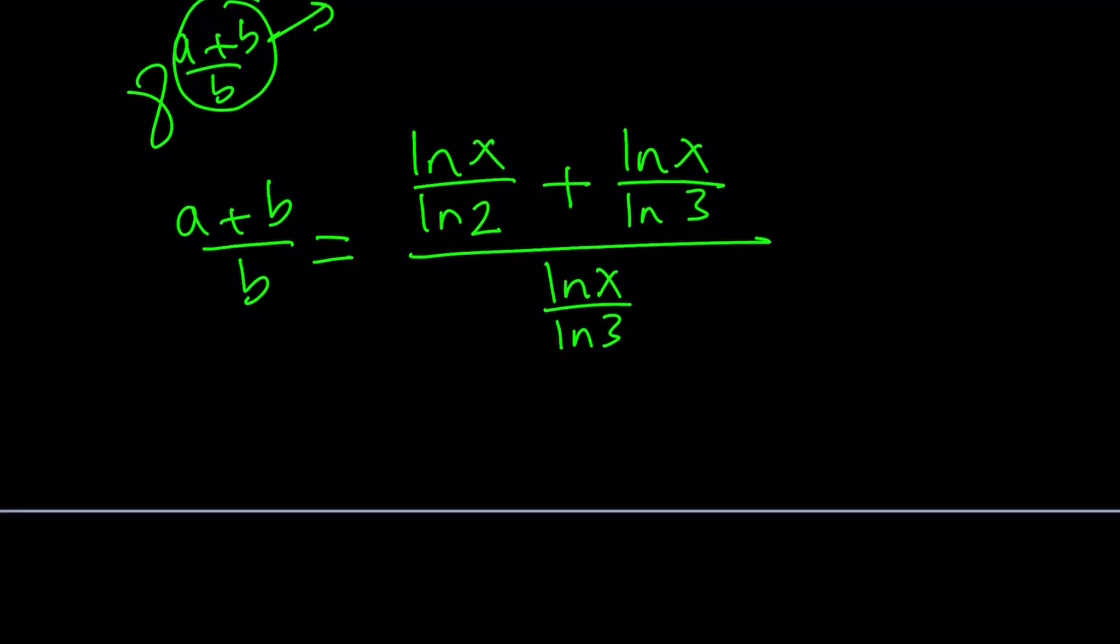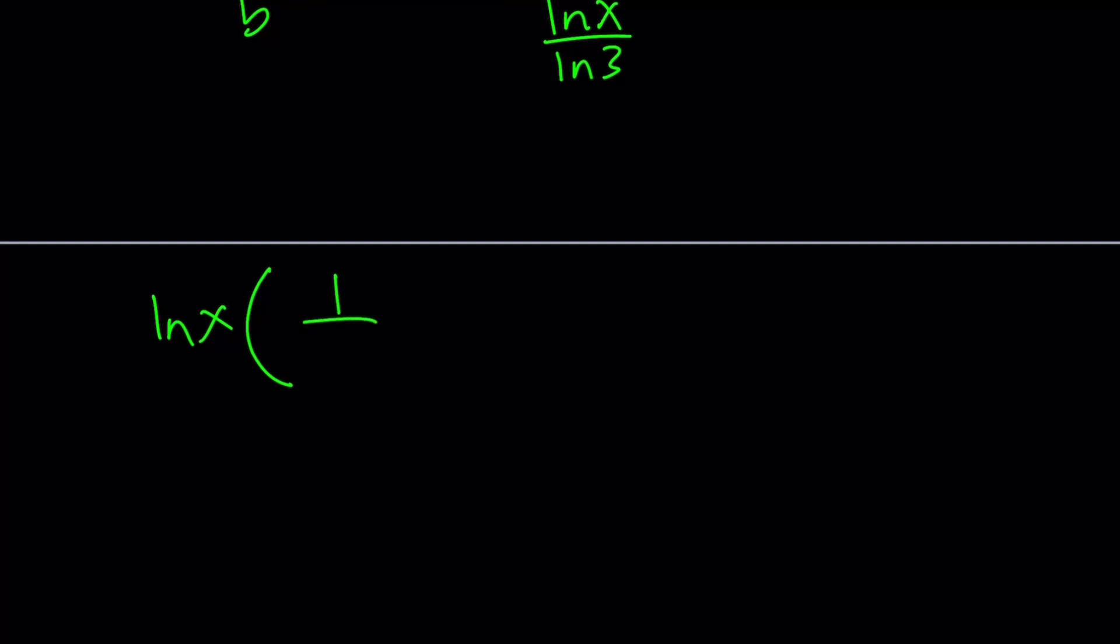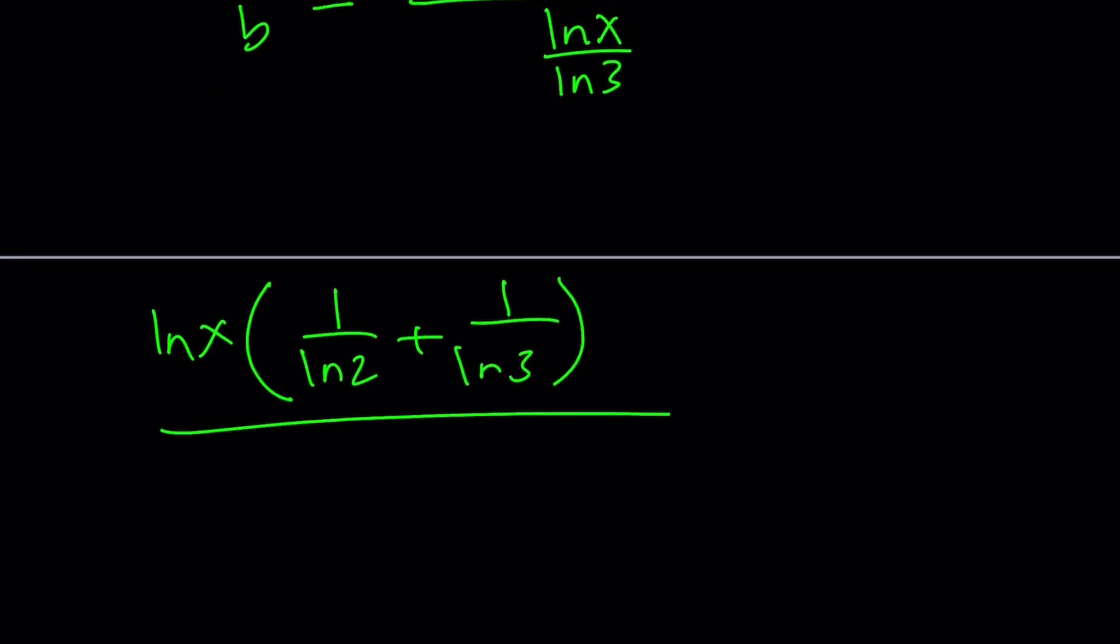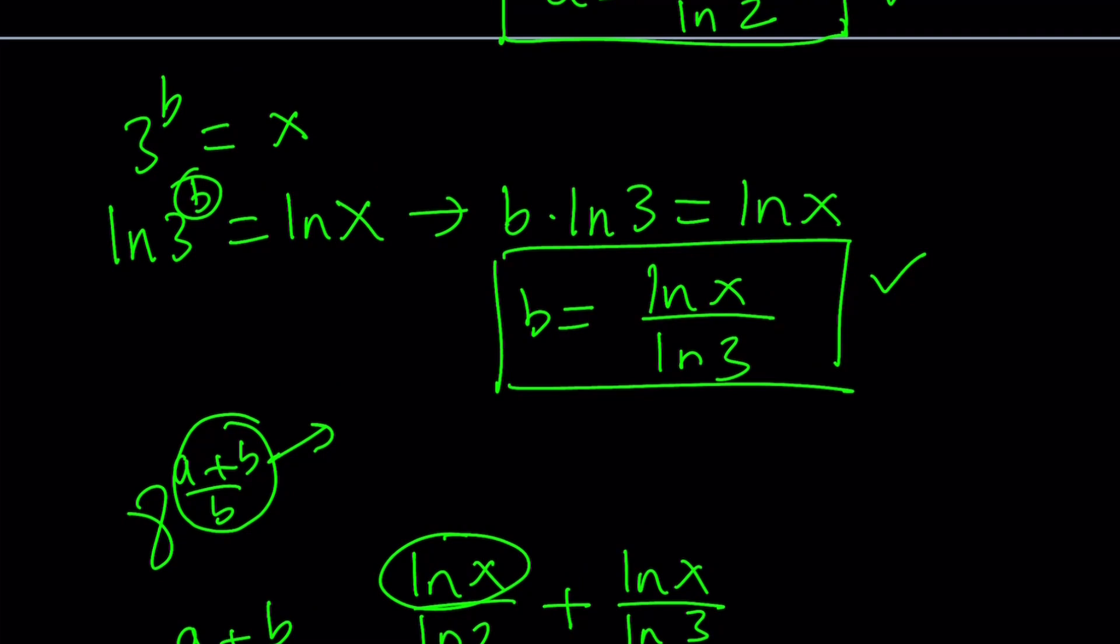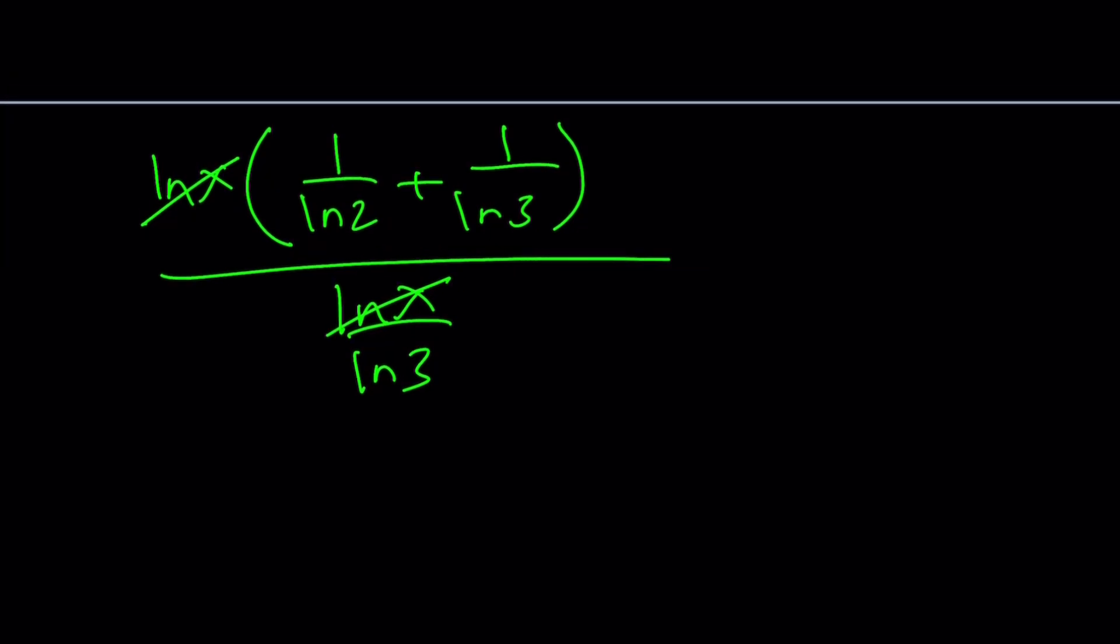First of all, notice that we can take out ln x. Inside the parentheses, we're going to get 1 over ln 2 plus 1 over ln 3. We took out ln x as a common factor. And then at the bottom, we have ln x over ln 3. We can cancel out ln x, and obviously x does not equal 0. B can't be 0 because if b is 0, then we're dividing by 0, which is not allowed. So we can cancel out ln x.